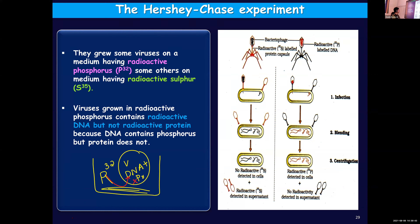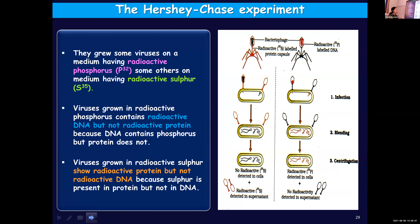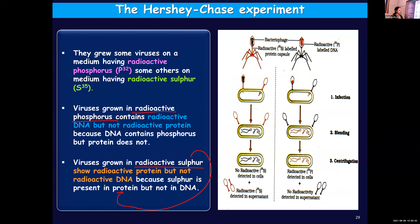In the second case, the reverse happened. The other group of bacteriophages grown in radioactive sulfur: this sulfur will be incorporated into the protein but not by DNA, because DNA doesn't contain sulfur. Sulfur is found only in protein. So when they are surviving in that medium, the sulfur present will be taken up by the protein component. Hence the protein became radioactive and DNA remained non-radioactive. So phosphorus is a constituent of DNA but not of protein; sulfur is a constituent of protein but not of DNA.